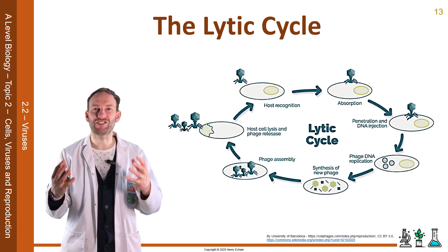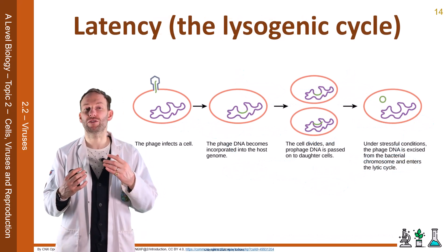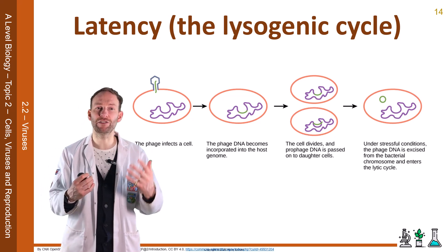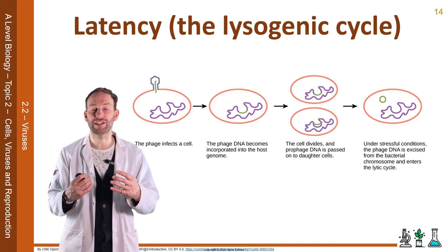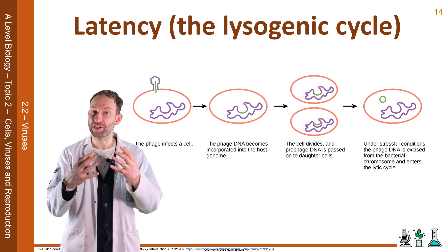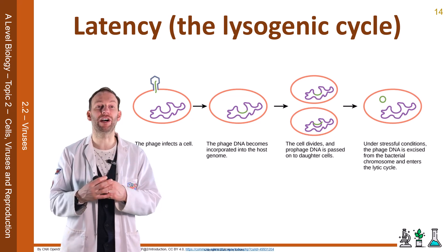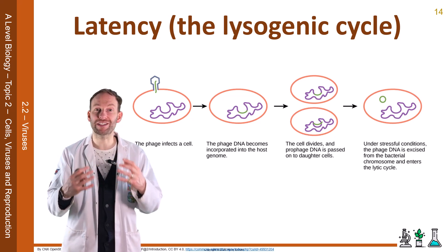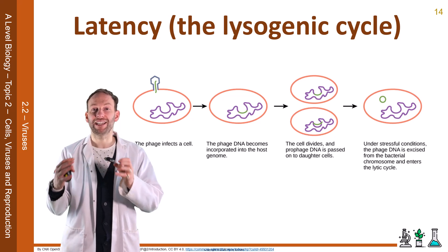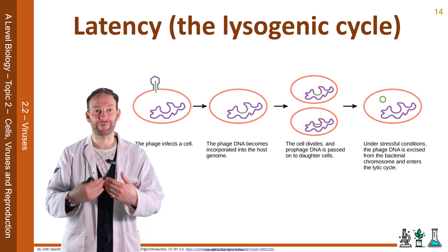Latency, or the lysogenic cycle, involves a virus we call non-virulent. In this case, the viral DNA gets inserted into the host's DNA and joins the host's genome — this is called a provirus. These viruses keep the host cell alive, so when the cell divides, it also passes on this provirus each time.